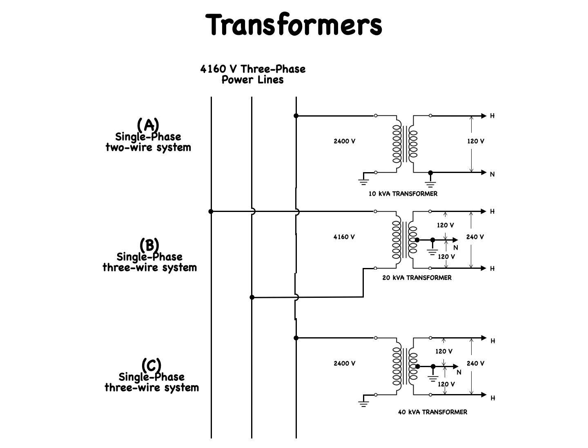This drawing shows a single-phase power distribution system. At A is a single-phase two-wire system. At B is a single-phase three-wire system, taken from two hot lines. And at C is a single-phase three-wire system, taken from one hot line and one grounded neutral.